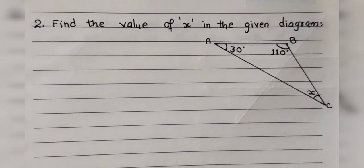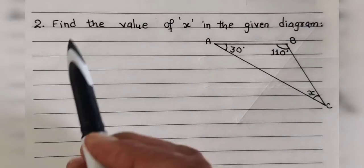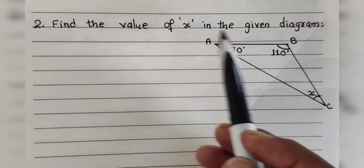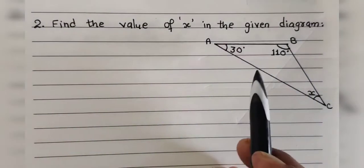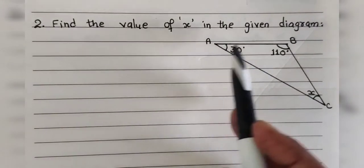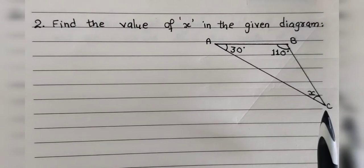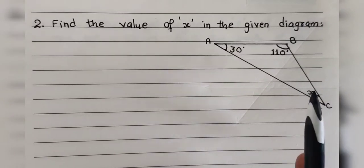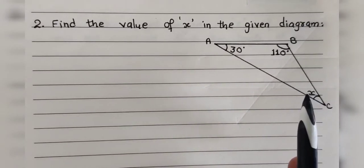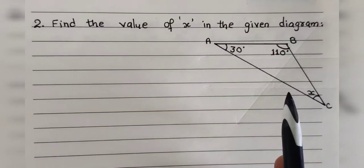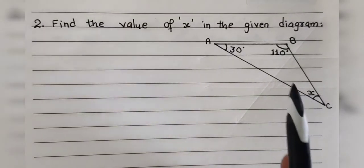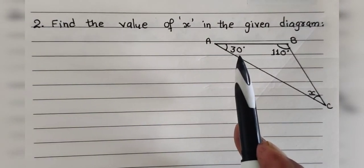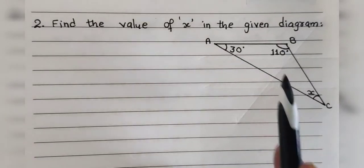Question number 2: find the value of x in the given diagram. Here the diagram is triangle ABC, so the name of the triangle is given. In this triangle, x is inside the triangle — it is not an exterior angle but an interior angle. A triangle always has 3 interior angles.